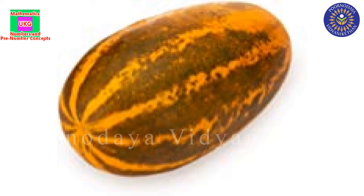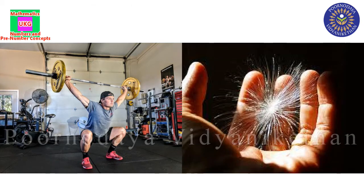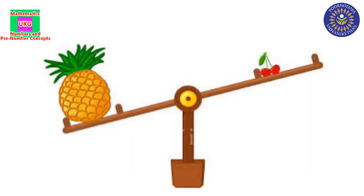Have you ever thought why some objects can be easily lifted while some cannot? This is because different objects have different weight. Some objects have more weight — they are called heavy objects. But some other objects have less weight, so these are called light objects.